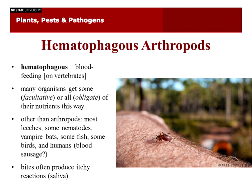The ones that get some are called facultative — this may be that they're chewing on hair or feathers and happen to take blood as an extra meal. But many of the things we're going to talk about today are obligate, which means they at least need blood in some part of life, if not their entire life. Other than arthropods, animals that suck blood fall in only a few categories: most leeches, some nematode worms, vampire bats, some fish like the South American candiru that feeds on blood of other fish and humans.